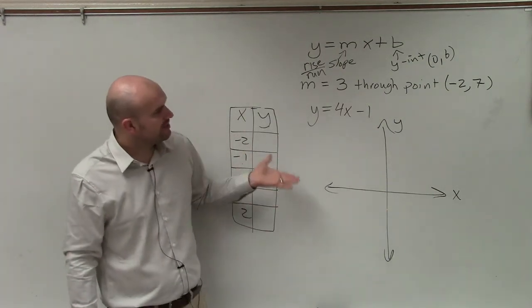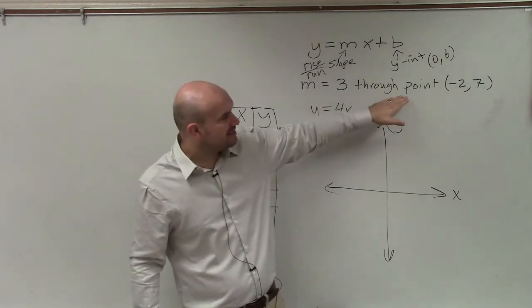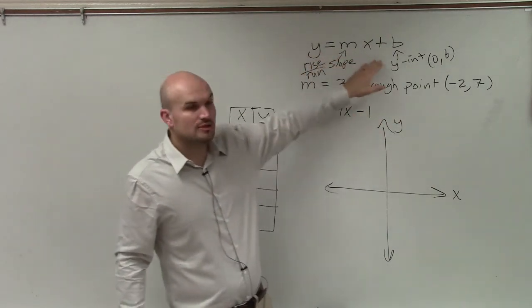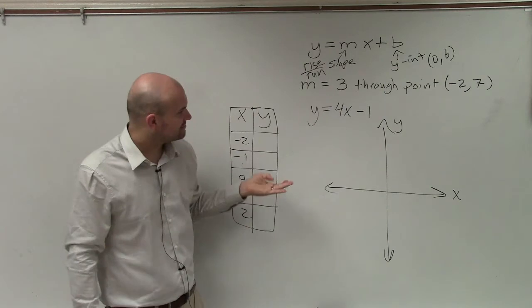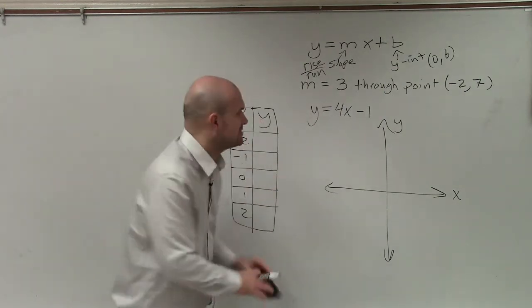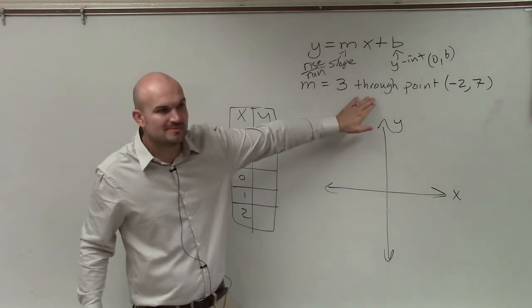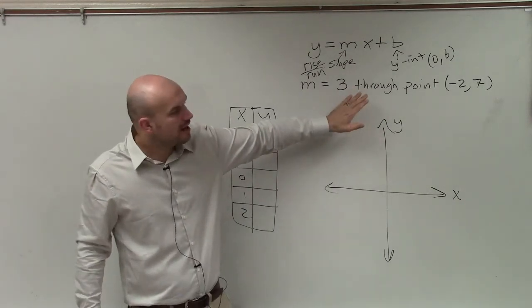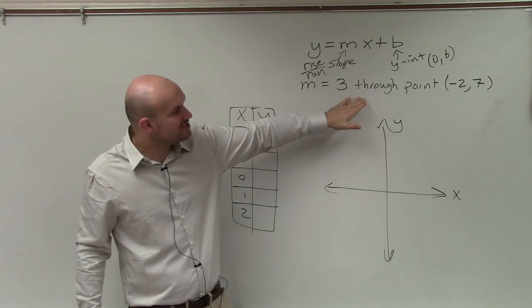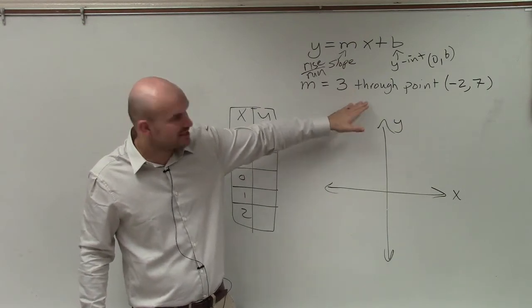Now, the problem with this, if we want to write the equation of the line, we want to be able to write this in slope-intercept form. And if I'm just going to kind of use a table of values, it's kind of difficult because we don't know what the y-intercept is, right? So we can't use a table of values to figure out what the equation is because we don't know what the y-intercept is.